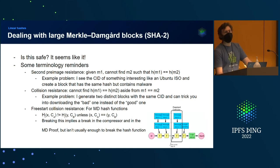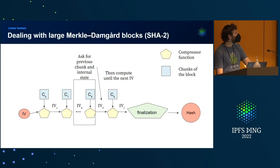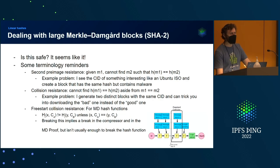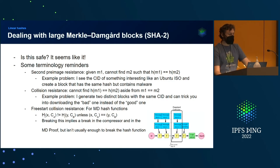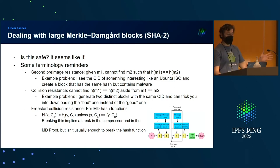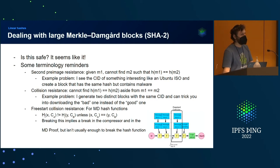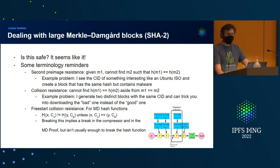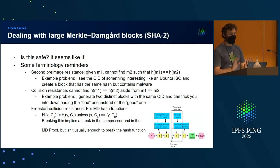Is this safe? I sort of just messed around with some hash function internals. I think so. Some terminology reminders for hash functions: there is second preimage resistance — we really want this. If you don't have second preimage resistance, everything is very bad. Given a certain message, I cannot find a second message such that the hashes of the two messages are the same.